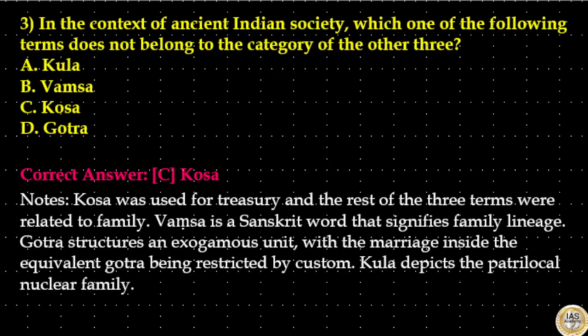Vamsa is a Sanskrit word that signifies family lineage. Gotra structures an exogamous unit, with marriage inside the same Gotra being restricted by custom. Kula depicts the patrilocal nuclear family.